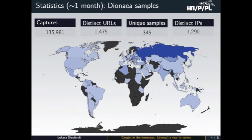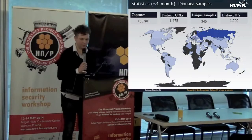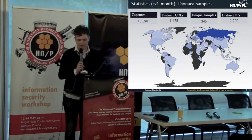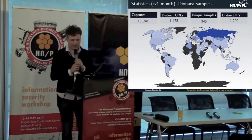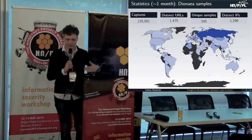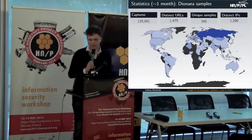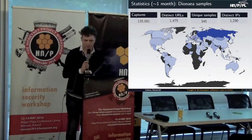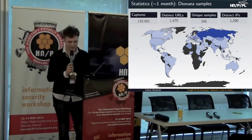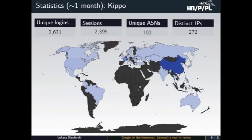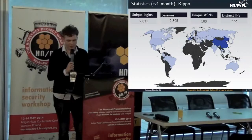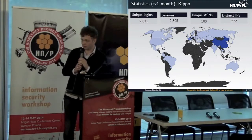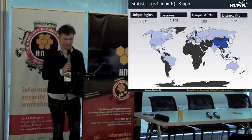Here are some statistics we captured over a little more than one month. These are Dionaea samples — distinct URLs provided in the shell code, unique samples, and distinct IPs that were connecting. You can see the geographical profile of the connections. The second set of statistics, with a slightly different geographical profile, is from the Kippo SSH honeypot — more evenly distributed but with a significantly lower number of IPs connecting.